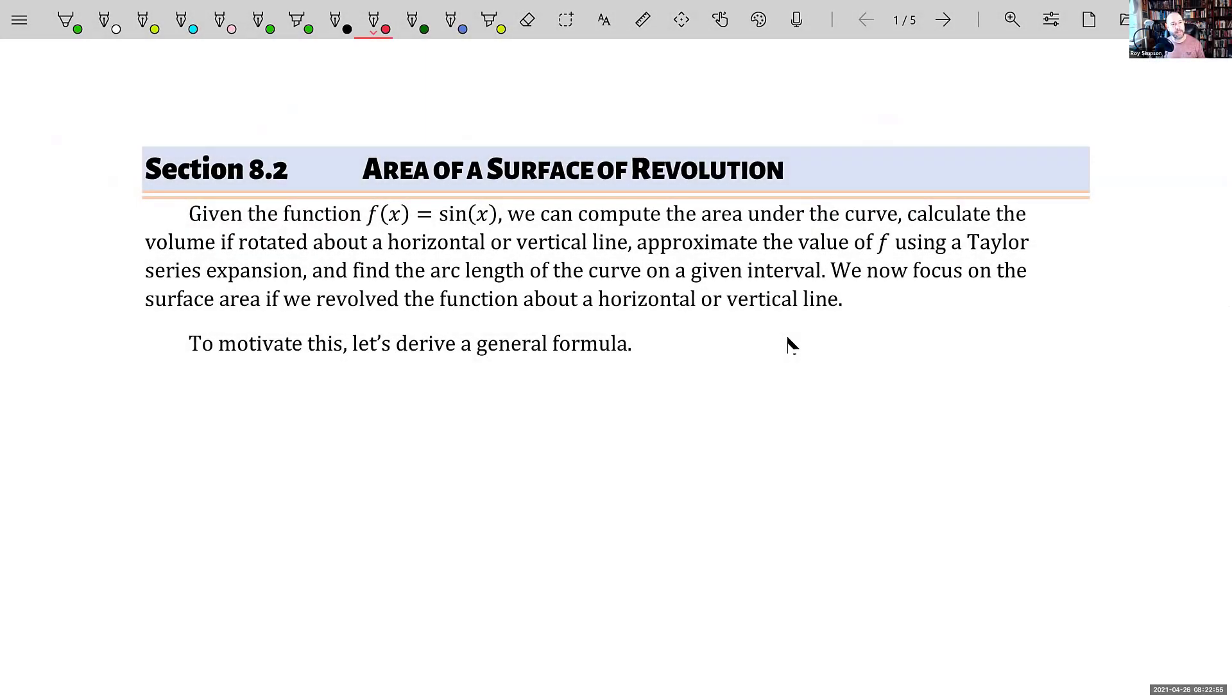The second section is about that same formula, just with a brand new twist. So now we know given some function sine of x, we can find the area underneath the curve, we can calculate the volume if we rotate about a horizontal or vertical line, we can approximate the value of it using a Taylor series expansion, and we can find the arc length of the sine curve now.